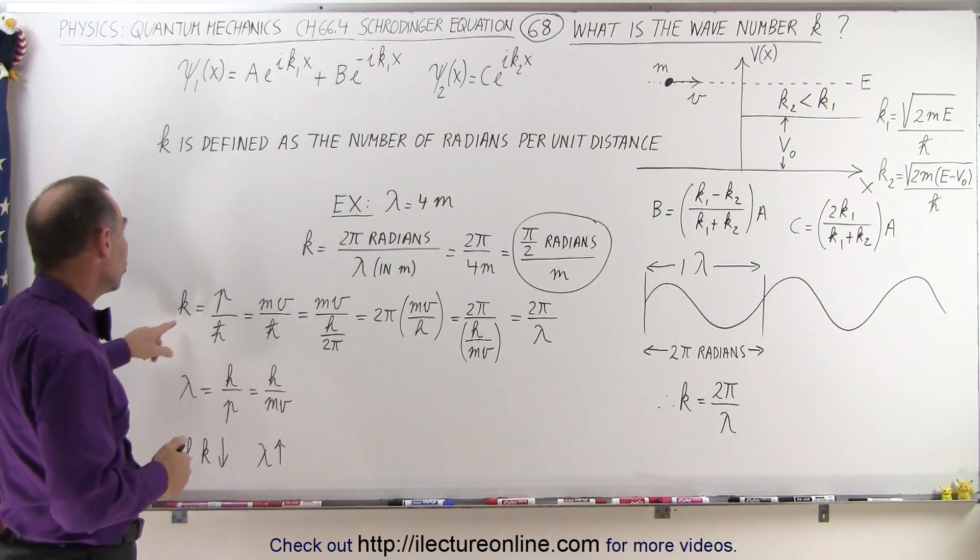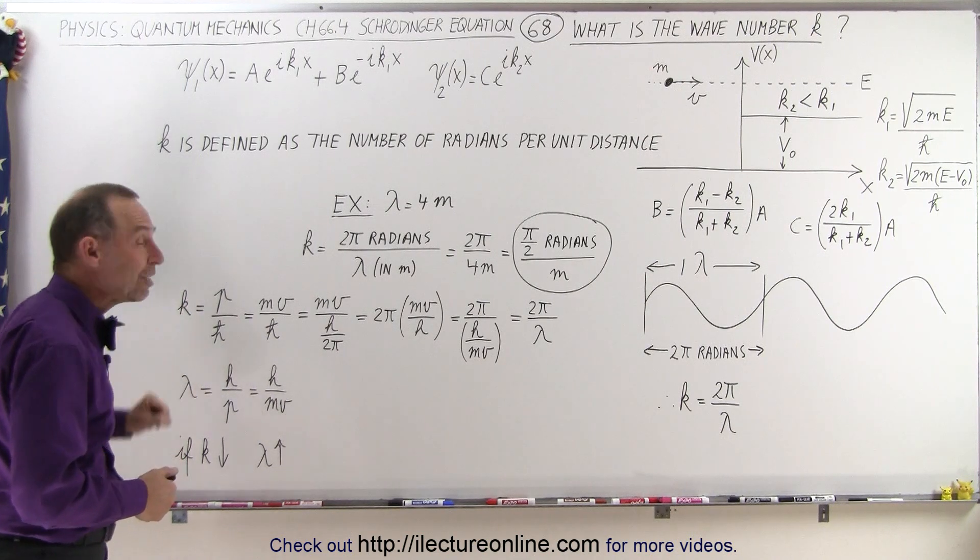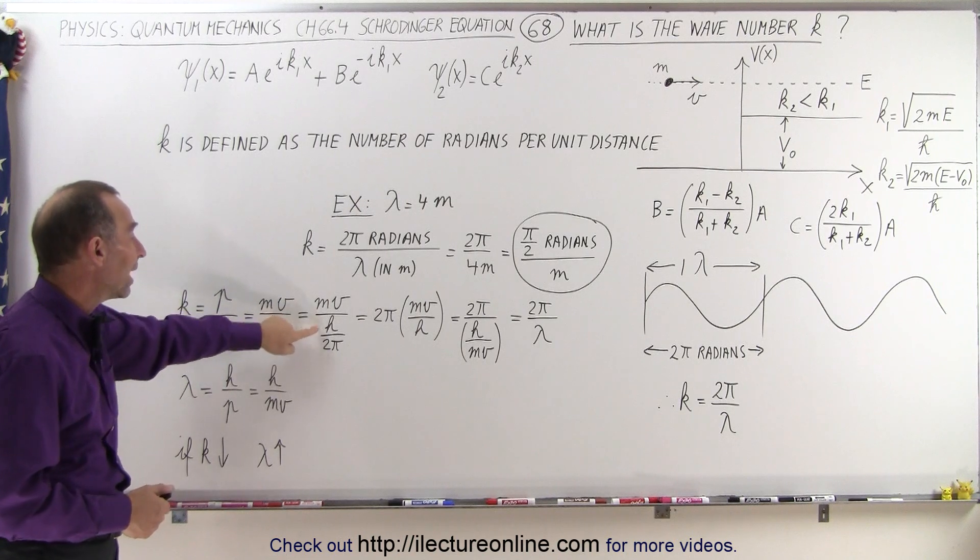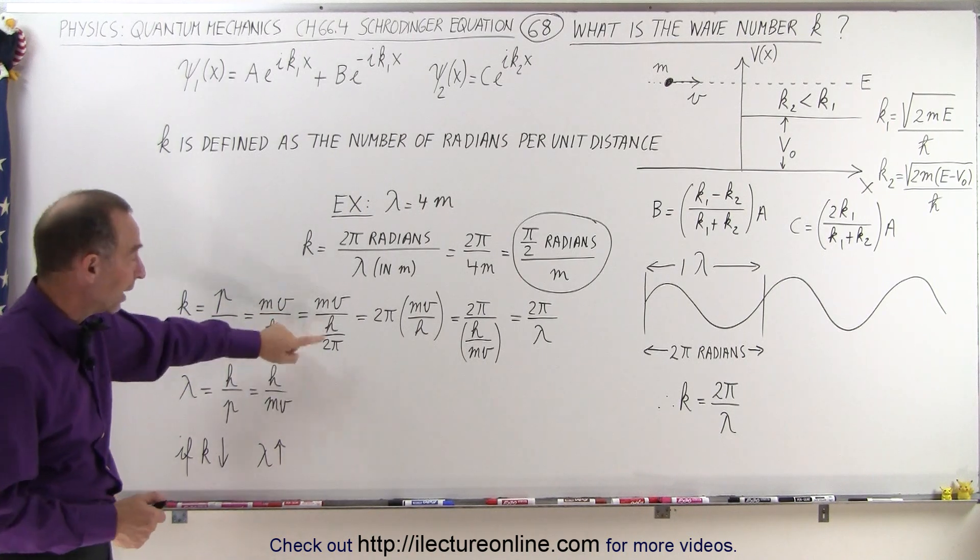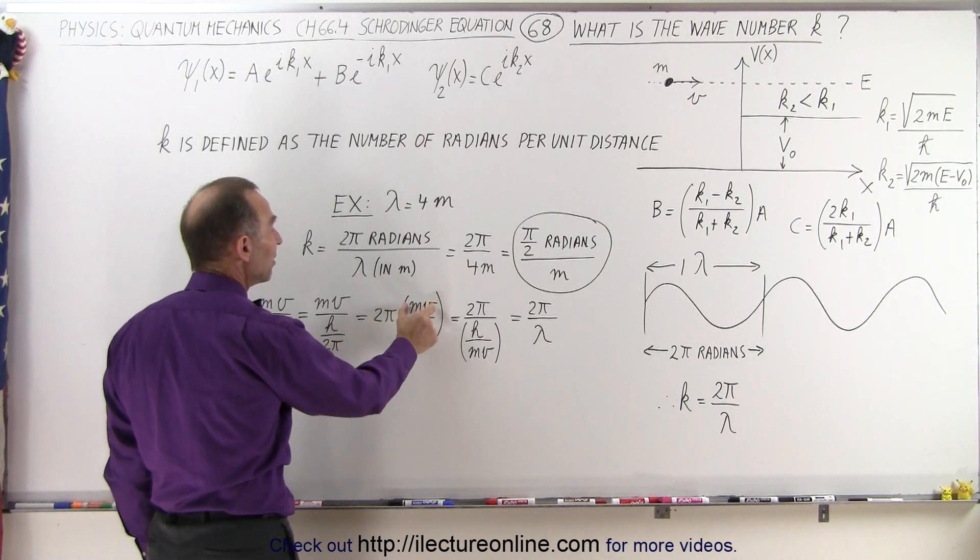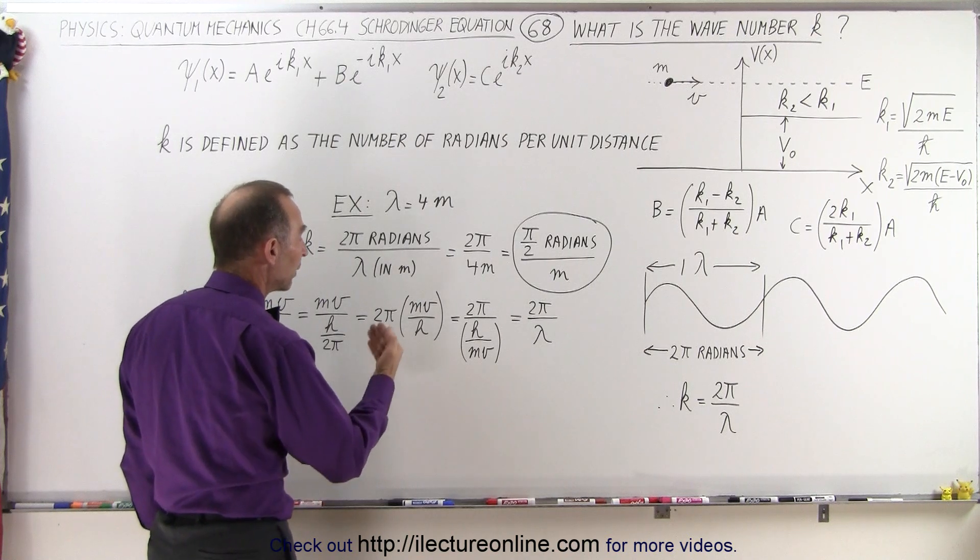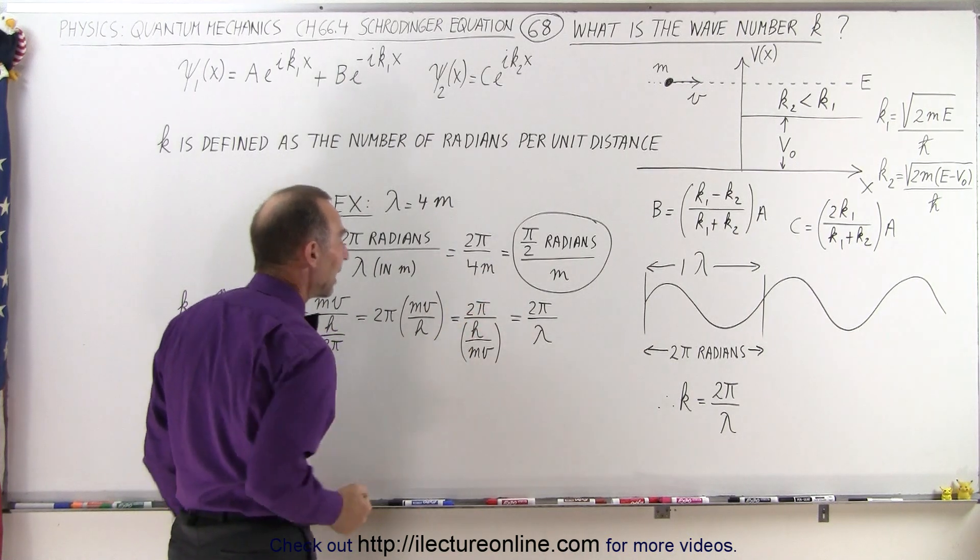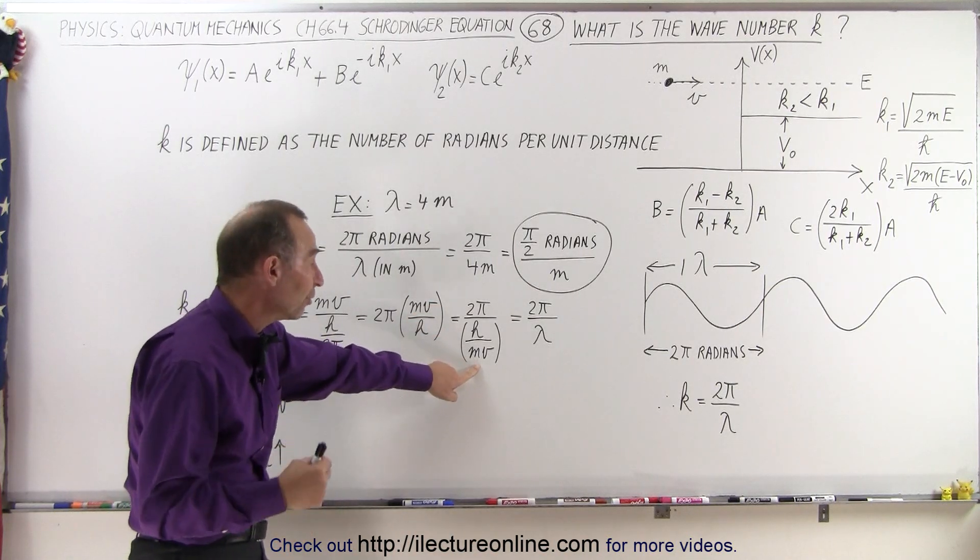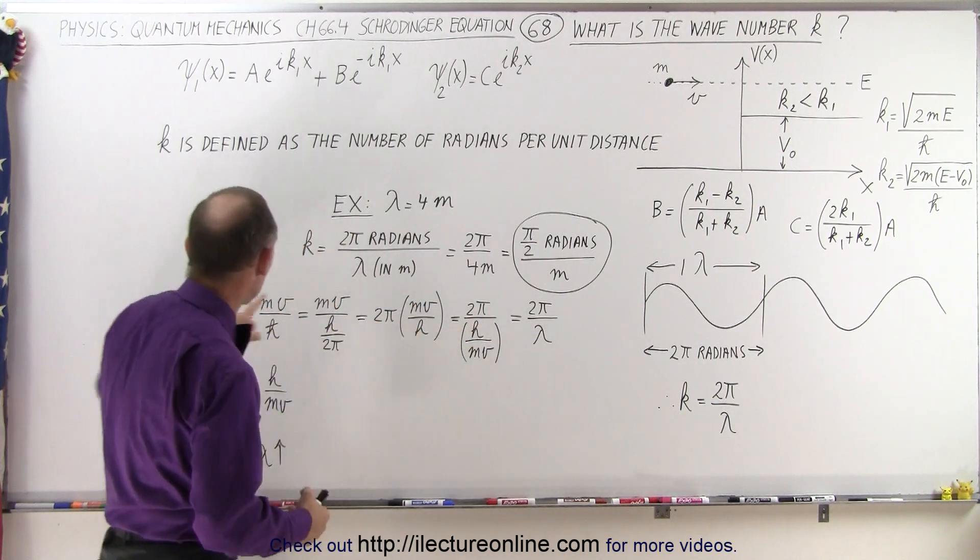Another interesting relationship is that k can be defined as the momentum of a particle divided by h-bar. Now the momentum is m times v, and h-bar can be written as h divided by 2π. If we now take the 2π to the numerator, we have 2πmv over h, mv being the momentum of the particle, h being Planck's constant, or we can write that as 2π over h divided by mv. Now, h divided by mv then necessarily must be the wavelength, because 2π divided by the wavelength must equal k.